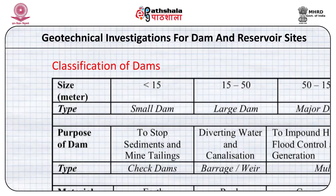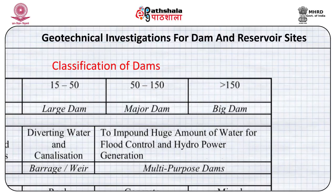As far as purpose is concerned, dams made to check sediment movement are called check dams. Barrages or weirs are made just for diverting water into canals. Multipurpose dams serve many different purposes, from raising the water level to flood moderation to generation of hydroelectricity.